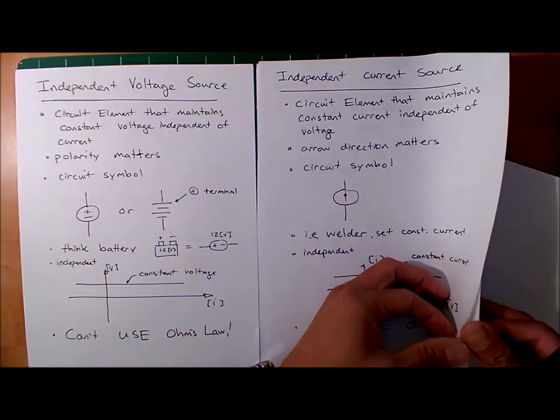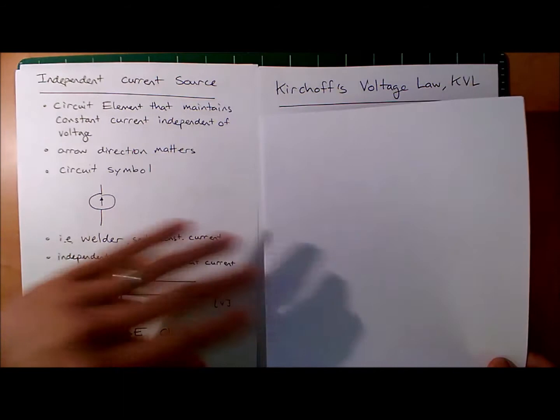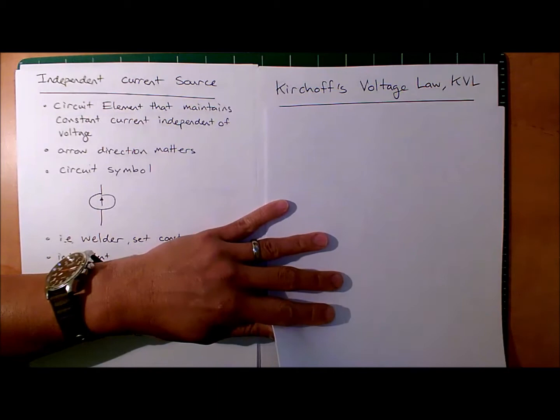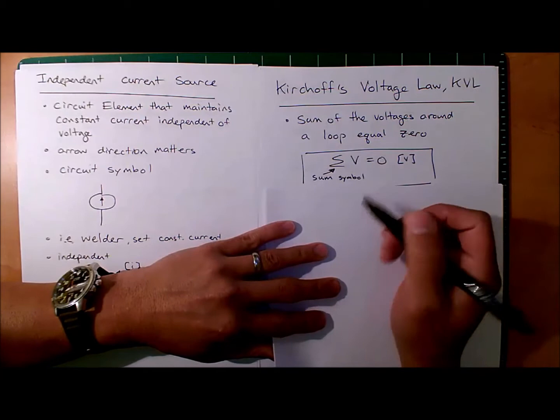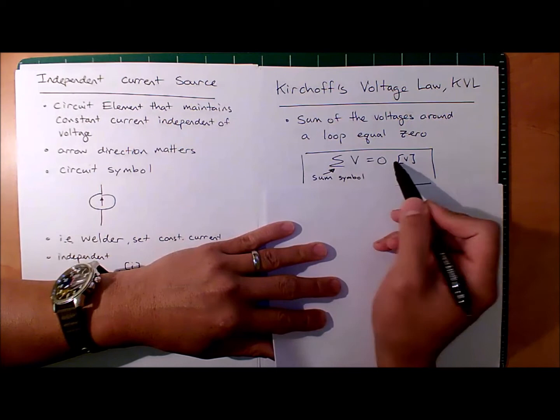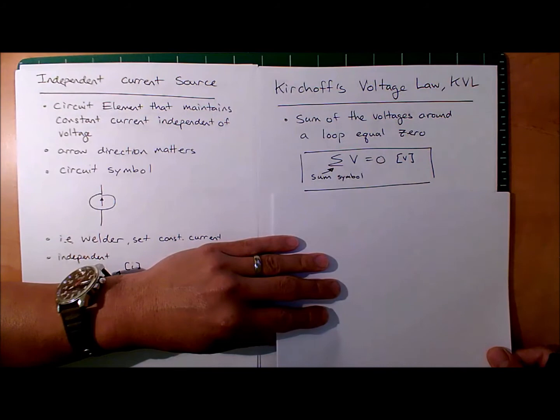Kirchhoff's voltage law — that's the next fundamental thing. Ohm's law, the resistor equation, KVL — these are laws you're just going to have to memorize and know how to use. The sum of voltages around a loop equals zero. We can write that mathematically as the sigma summation: sum of V equals zero. But that doesn't really mean a lot until you see what we mean by a loop and voltages.